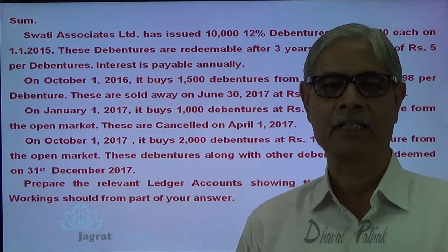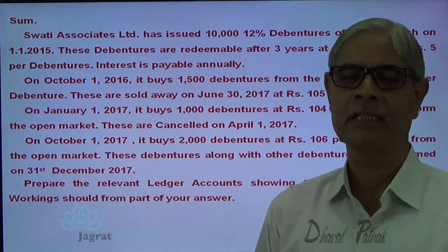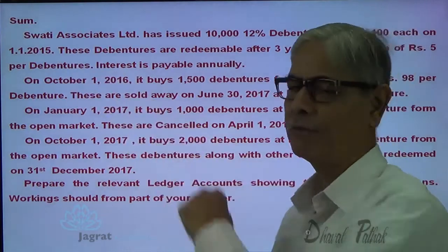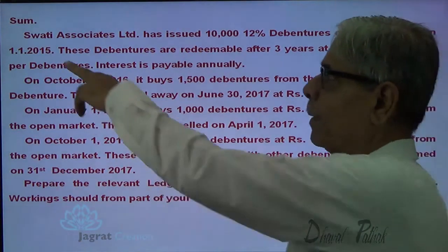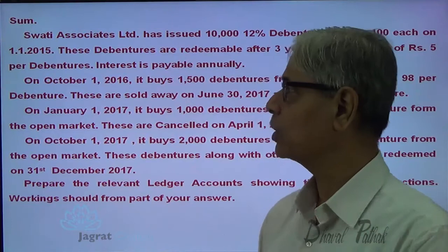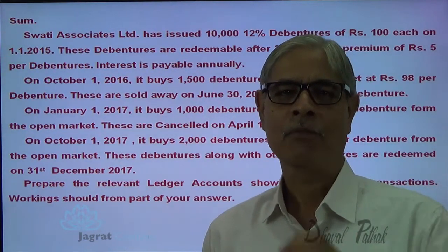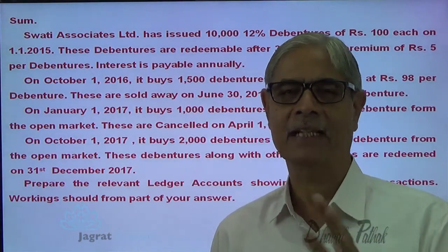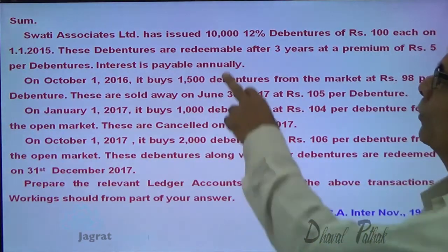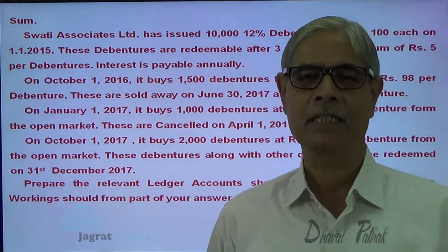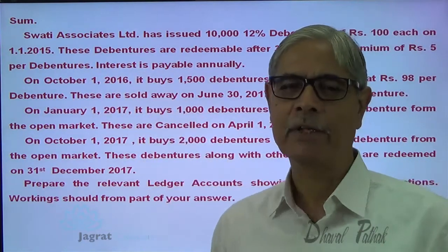When we prepare ledger accounts for 3 years, we are required to write debenture interest entries for 3 years. So we are required to pay interest on debentures on 31st of December 2015, 31st of December 2016, and 31st of December 2017. The first transaction took place on 1st of October 2016. There are no transactions for purchase of own debenture, sale, or cancellation in the first year. So in the first year, debenture interest will be paid in full on 10,000 debentures of Rs. 100 each at 12%.